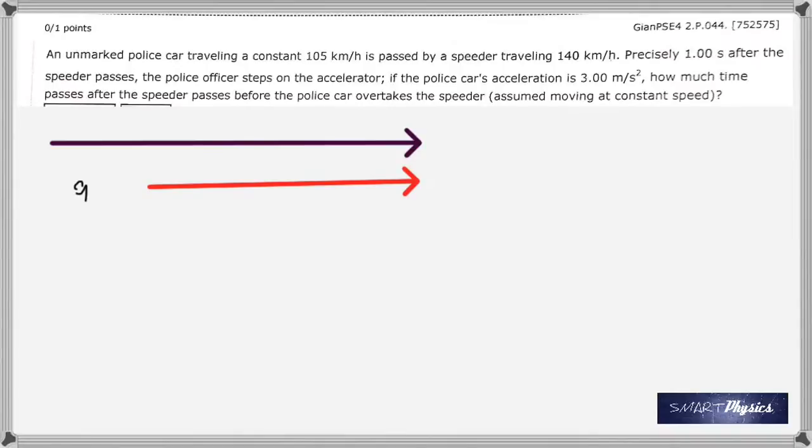If the acceleration of the police car is 3 meters per second squared, how much time passes after the speeder passes before the police car overtakes the speeder? Now you really need to visualize this properly in order to get an idea. The black arrow shows the police car starting from here, and assume that this is the point at which the police overtakes the speeder.